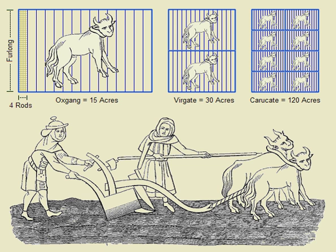The acre is a unit of land area used in the Imperial and U.S. customary systems. It is traditionally defined as the area of one chain by one furlong — 66 by 660 feet — which is exactly equal to 10 square chains, 1/640th of a square mile, or 43,560 square feet, and approximately 4,047 square metres, or about 40% of a hectare.